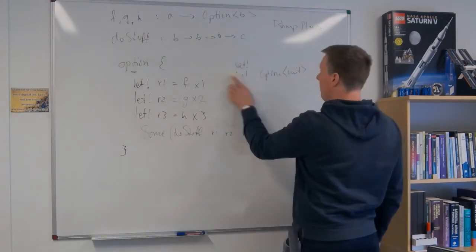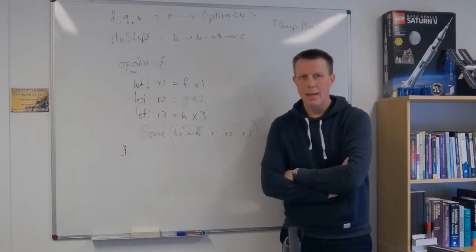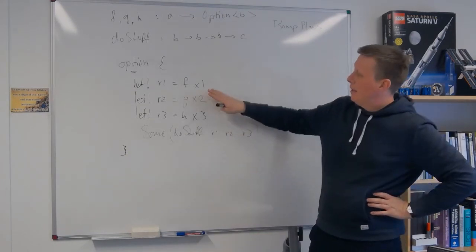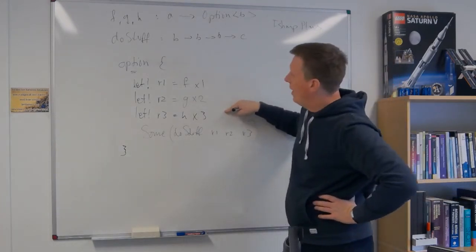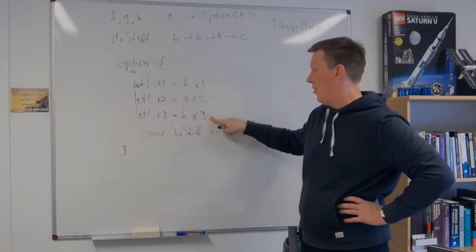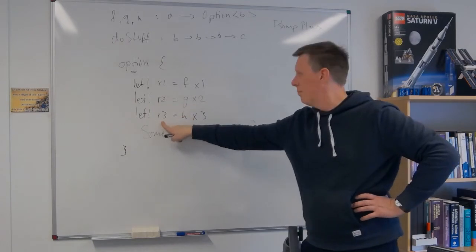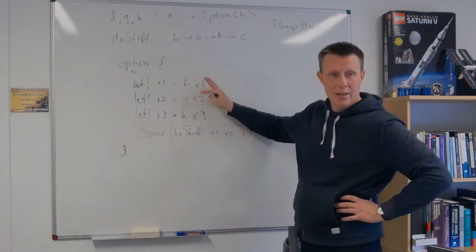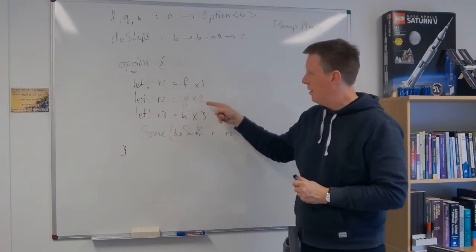So before we implement one, let's just look at a couple of small little details here. A couple of things to note in this particular case. Here I have three separate values X1, X2, X3. They're independent of each other. And I just do this let bang and I bind it to R1, R2, R3. And then I use those results here. So there's no interdependence. I could flip these lines around any way I like. It doesn't matter. Since I don't need the intermediate result.